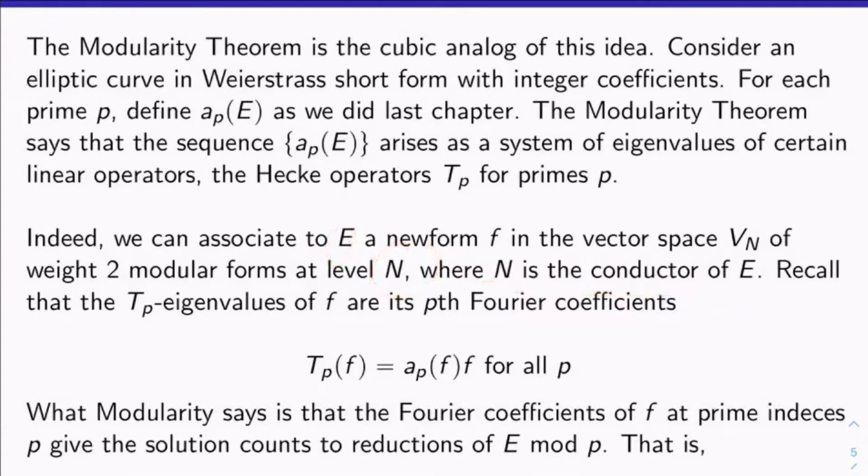Now, remember, the T_p eigenvalues of f being a T_p eigenvector. We've talked about this before. The eigenvalues are just the pth Fourier coefficients of f. In other words, T_p(f) is a_p(f) times f for all primes p. We've seen this.